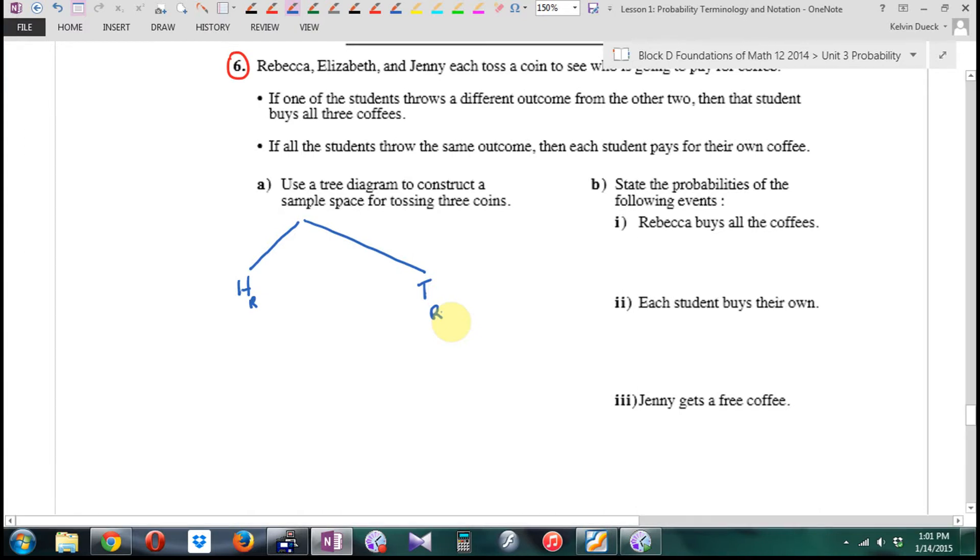Rebecca. So I'm going to have heads from Rebecca, tails from Rebecca. And I'm going really wide because I know I've got to fit a couple more trees in. Who flips next? So I can have heads Elizabeth, tails Elizabeth, heads Elizabeth, tails Elizabeth.